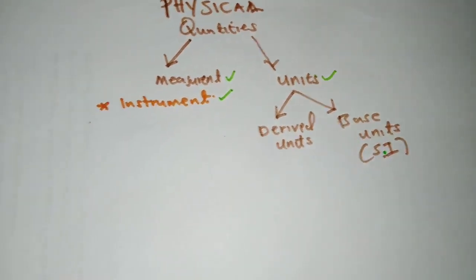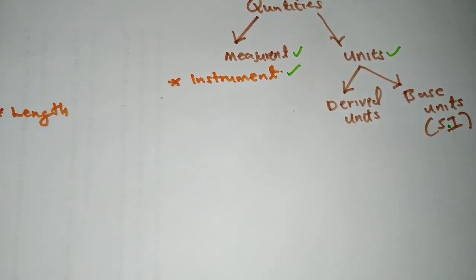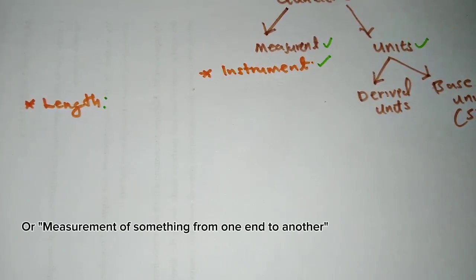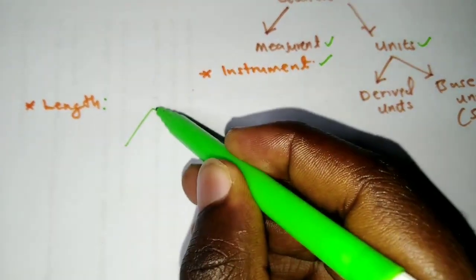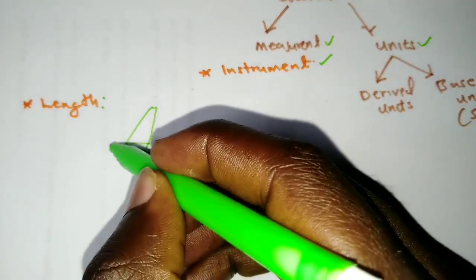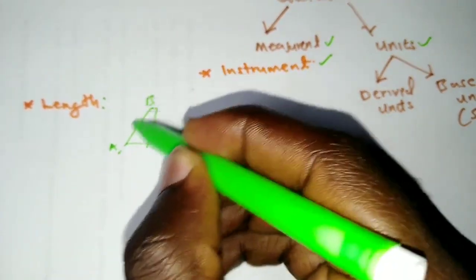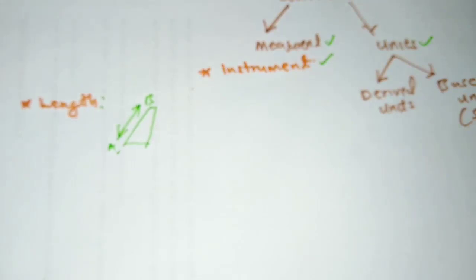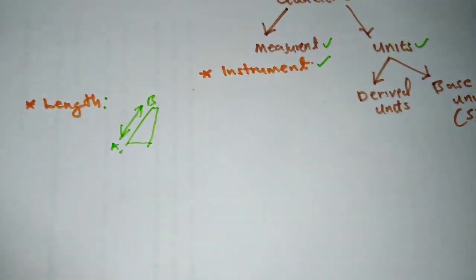So looking at length — the first physical quantity that we looked at was length. Length is simply the distance from one point to another. For instance, if you want to measure the length of this object, we're going to measure it at point A up to B. So this distance is what we call length.